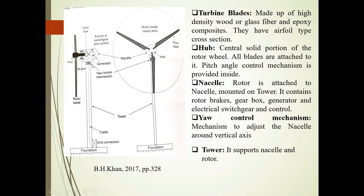Next is the yaw control mechanism. It is used to adjust the nacelle around the vertical axis. Next is the tower. This tower supports the nacelle and rotor.